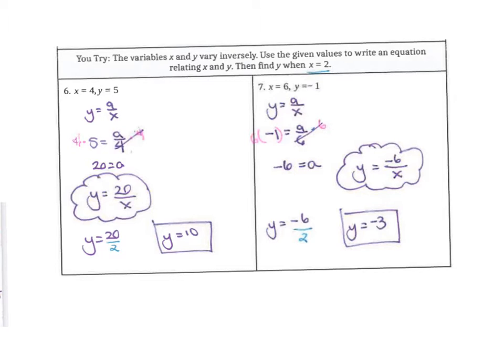For number 7, you found, or should have found, that a is negative 6. So the equation is y equals negative 6 over x. And then when you plug in 2, you find that y equals negative 3.